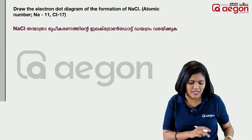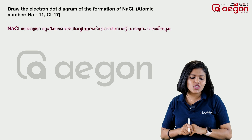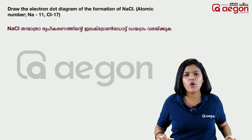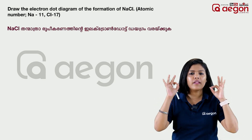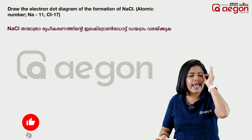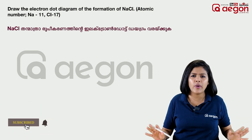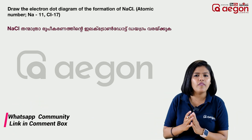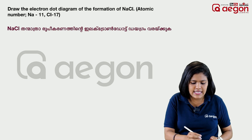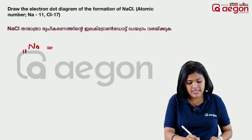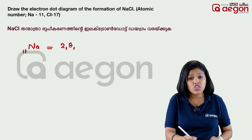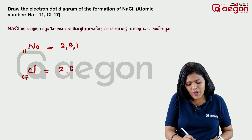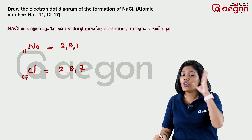Draw the electron dot diagram of the formation of NaCl. Let's take a look at the electron dot diagram of this topic. In this example, Sodium has atomic number 11 with configuration 2, 8, 1. Chlorine has atomic number 17 with configuration 2, 8, 7.